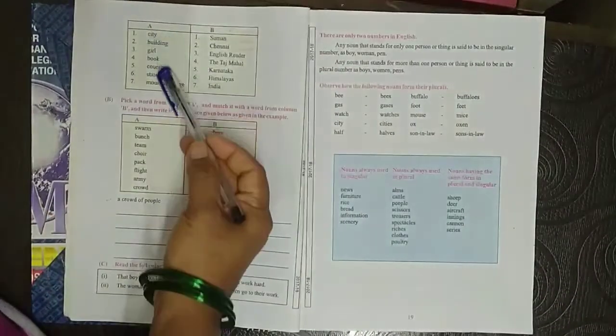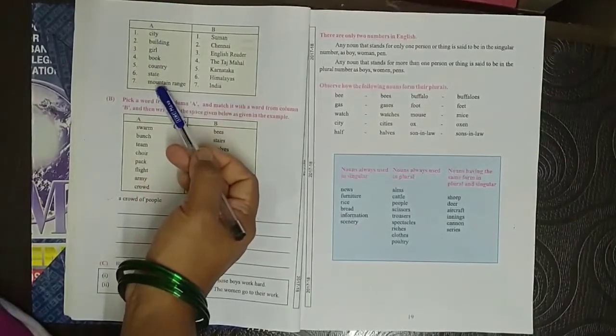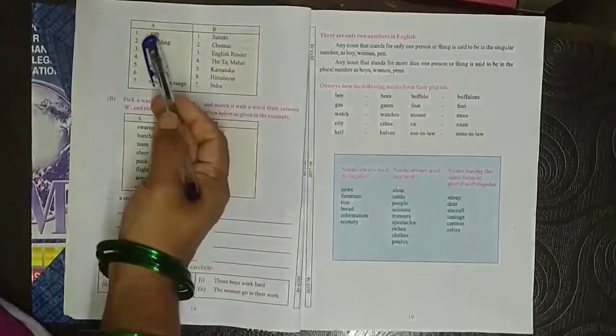Now second, column A has ten common nouns, match them with ten proper nouns in column B. So here in A there are common nouns and in B there are proper nouns, so we match with it like city.